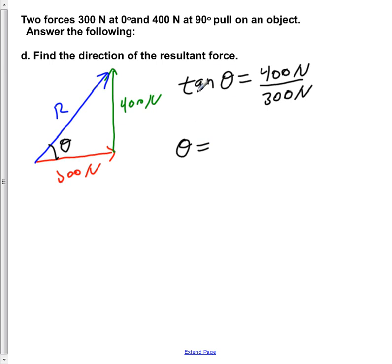To solve for just theta alone we have to take the tan inverse of both sides. So if we do that we would get tan inverse of 400 N over 300 N.